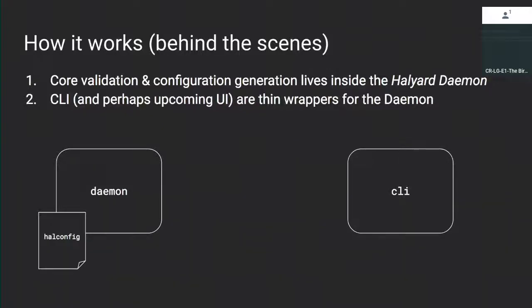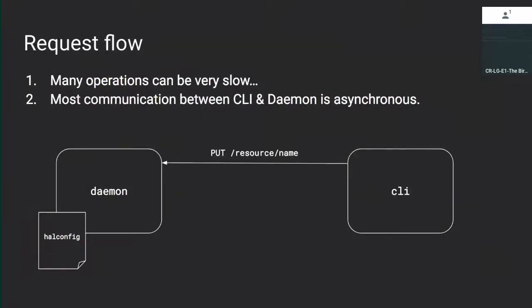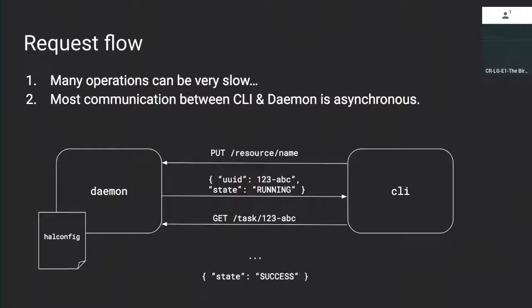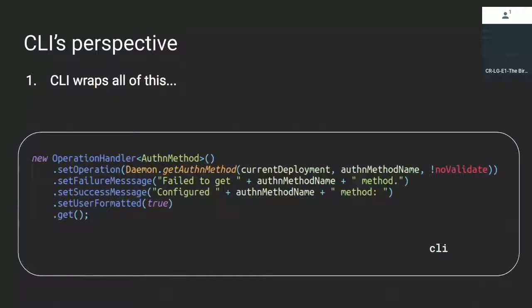The idea is that all this knowledge shouldn't live just inside a tool you can only interact with via CLI — pretty much everything happens inside this daemon and this hal-config file. A lot of the operations like deploying Spinnaker or validating more complicated credentials objects take a while, so most of the communication between the daemon and the CLI is asynchronous. You do something, it starts running, and eventually it succeeds or fails. Inside the CLI, it's a very thin wrapper — it just has operation handlers that say if it succeeds do this, if it fails do that, and executes on your behalf. Easy enough to replicate with your own tooling.